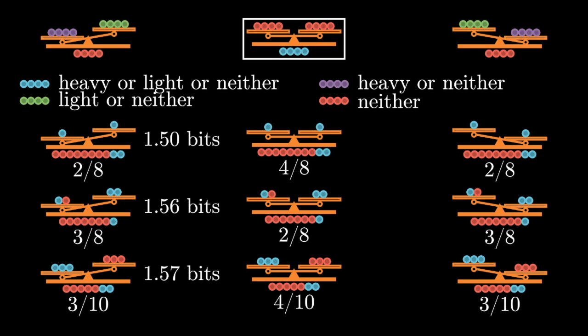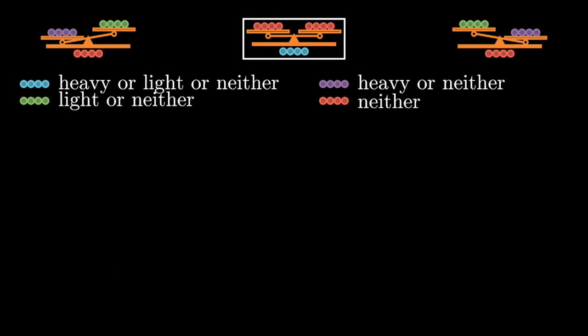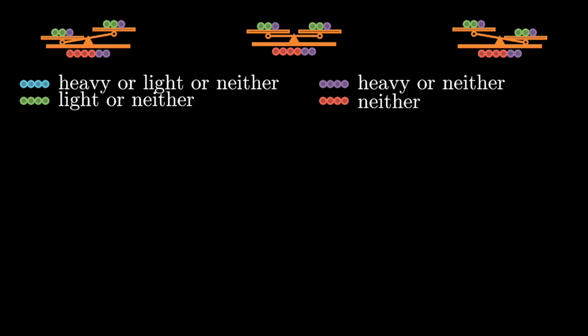And all of this applies by symmetry to the other case where the right-hand side goes down. So we just need to look at the middle case where they were even in the first weighing. All of these options give you quite a bit of information in expectation, but the best one is where you weigh three known normal ones against three that you have no information about.